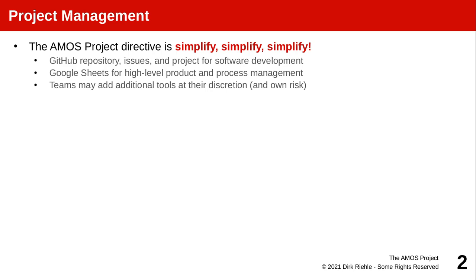Mostly we will use GitHub for the code repository but also for detail fine-grained issue and process management. So we'll use GitHub issues and what's called GitHub project, a Kanban board. For high-level tracking we will use Google Sheets, which will serve as a form to make our life easy. You can add to this if you want, but you do it at your own risk. The tools we give you are required, mandatory, and we use them to track how you're doing.